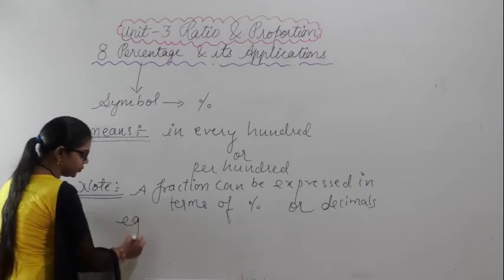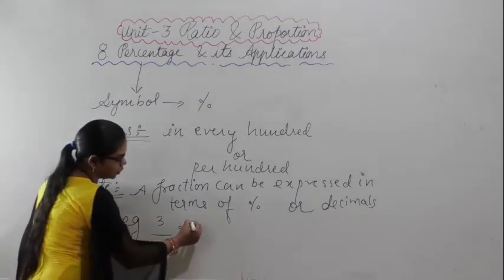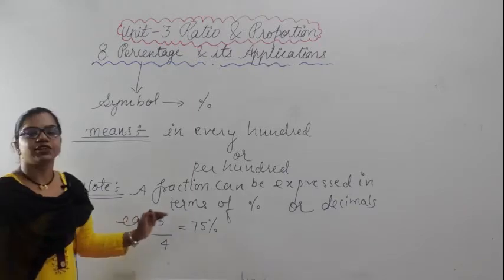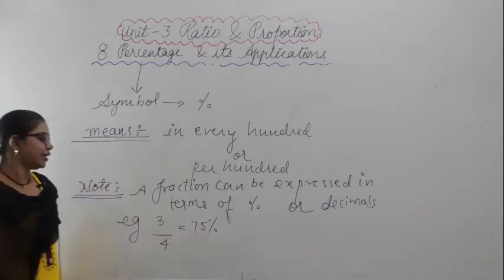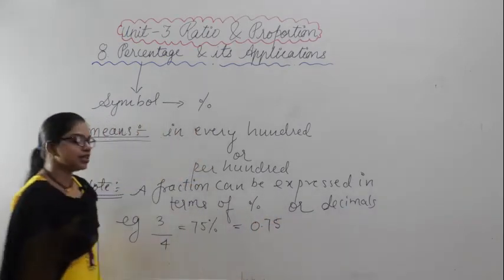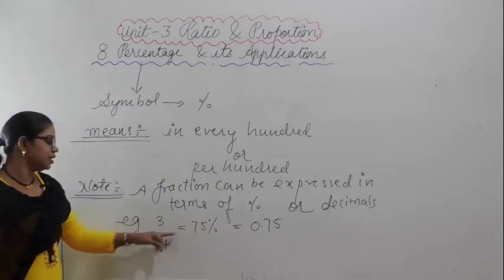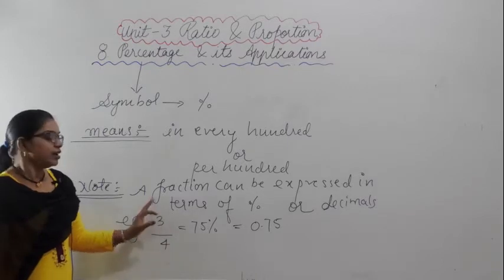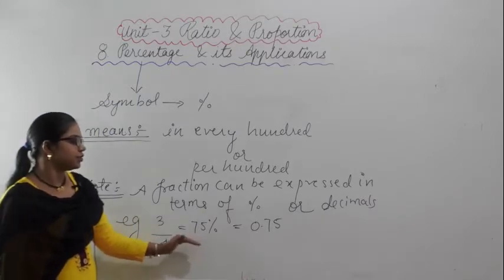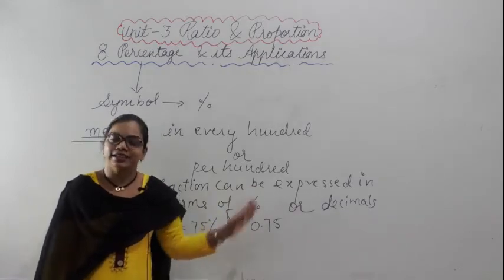For example, 3/4 is equal to 75%. If I take out the percentage for this, it will be 75%, or I can write it as 0.75 in decimal form. So a fraction like 3/4 can be expressed as 75% or as the decimal 0.75.